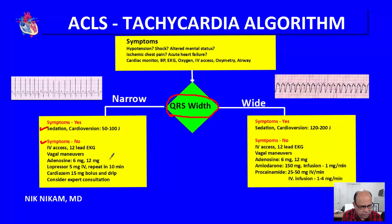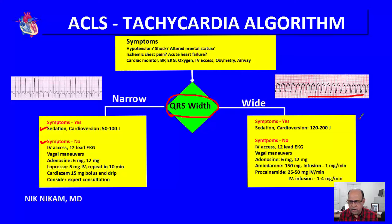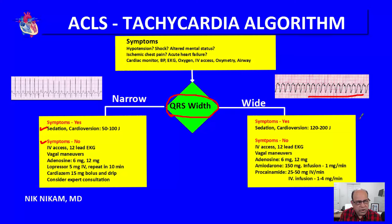Now let's look at wide QRS tachycardia. As noted, it could be ventricular in origin or supraventricular with bundle branch block or aberration. If the patient is having symptoms, there is only one answer: sedation and cardioversion. The standard dose for ventricular tachycardia is 100 to 200 joules biphasic. If cardioversion doesn't work and the patient goes into ventricular fibrillation, immediately defibrillate using 200 joules.